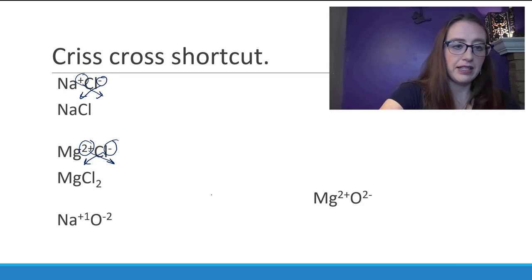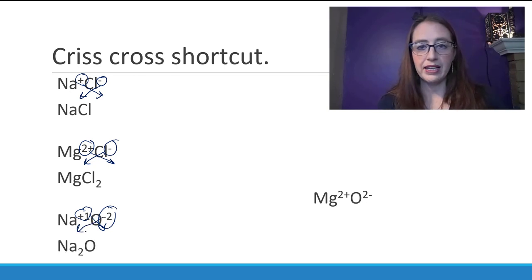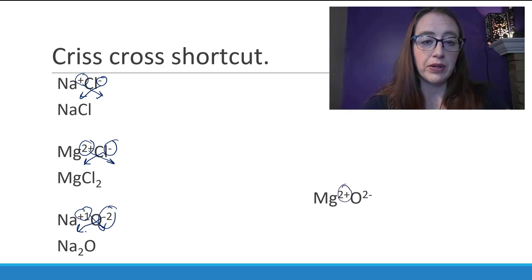Now for sodium oxide, the plus one would come down here, the minus two would come down here, and we would get Na2O. Now let's do the one that we would need to be really careful of. When we are doing ionic compounds it is always the lowest whole number ratio. So what happens for MgO if we bring this down here and this down here?